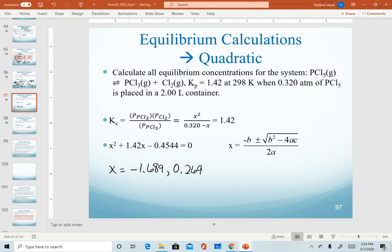Realize in our ICE table, we have just x's at equilibrium. We can never have a negative concentration or pressure. So any negative sign, that value is automatically crossed out. So it has to be this one.